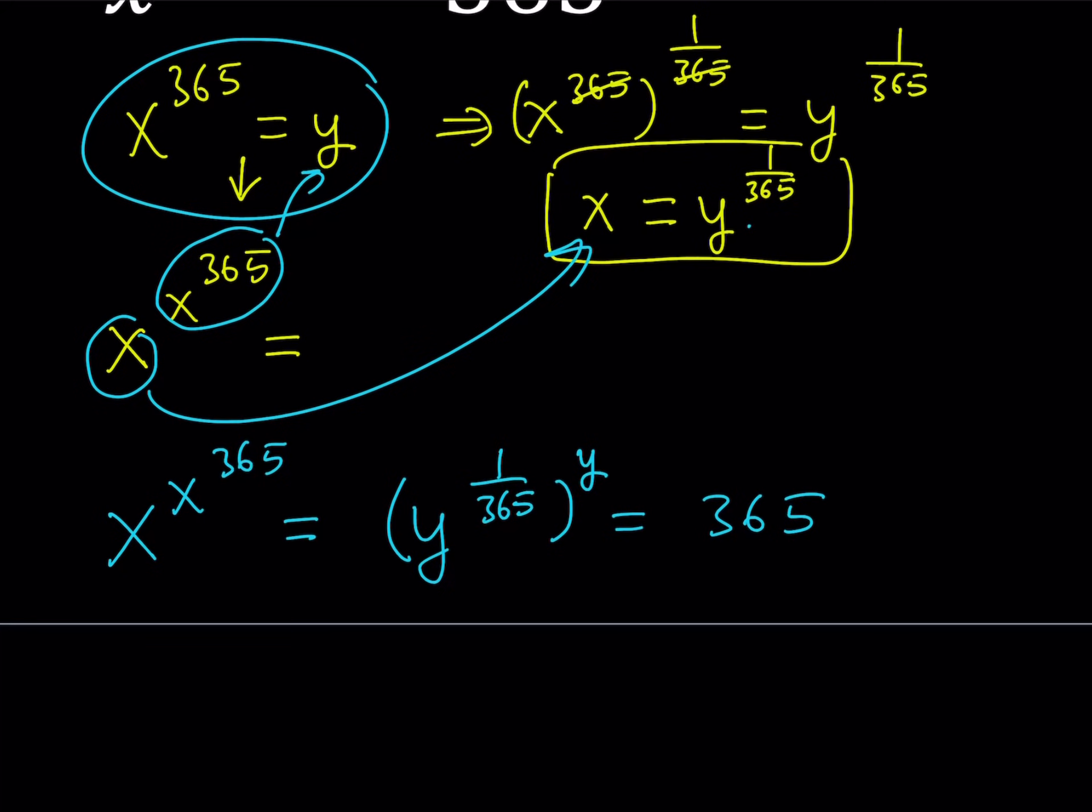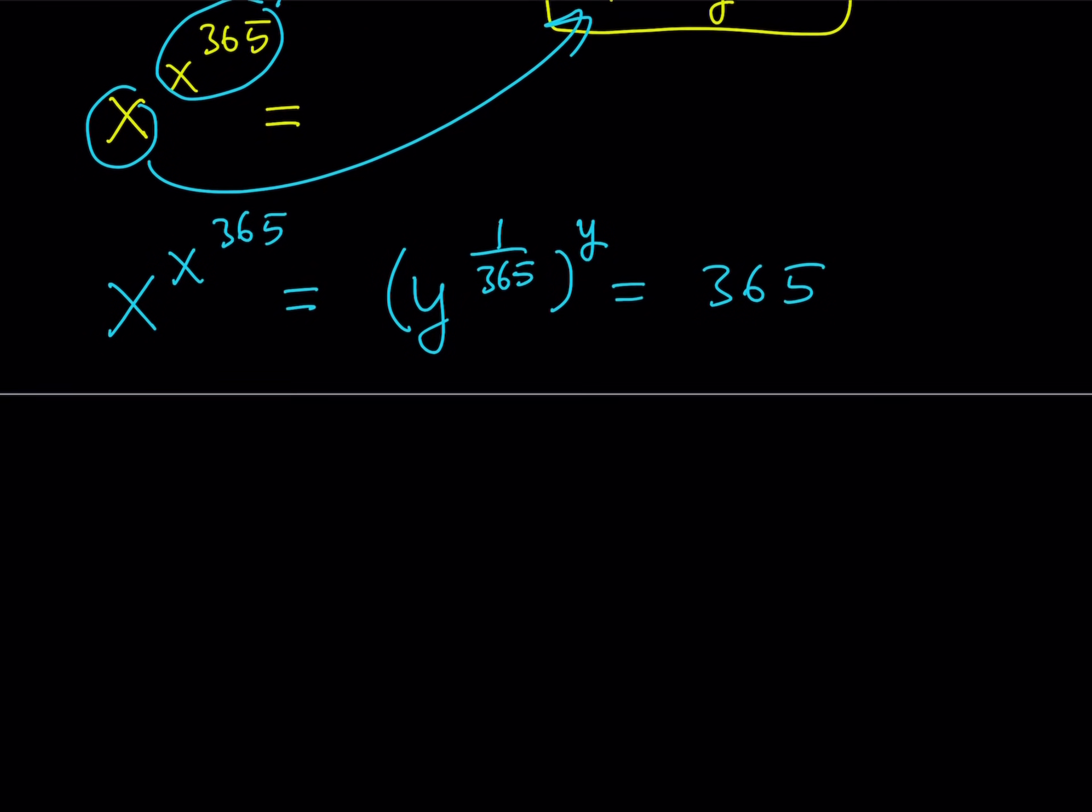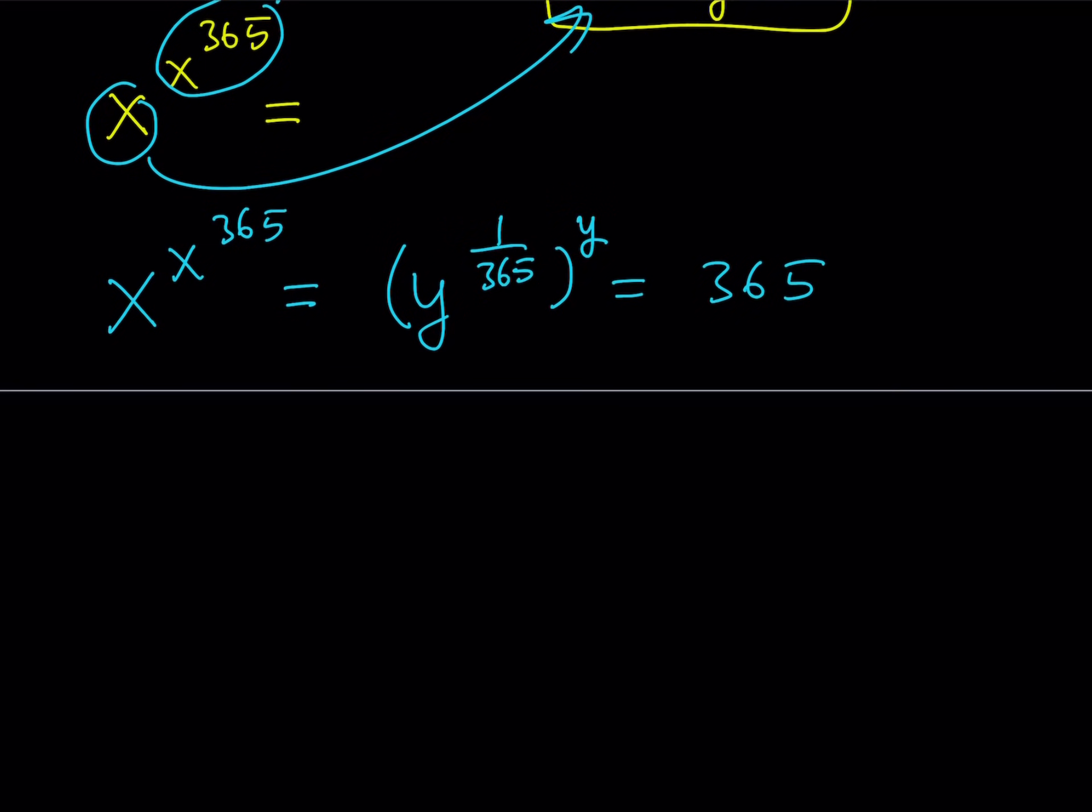So let's go ahead and multiply these exponents. When you raise a power to another power, you can just multiply the exponents. And you're going to be getting y to the power y over 365 is equal to 365.